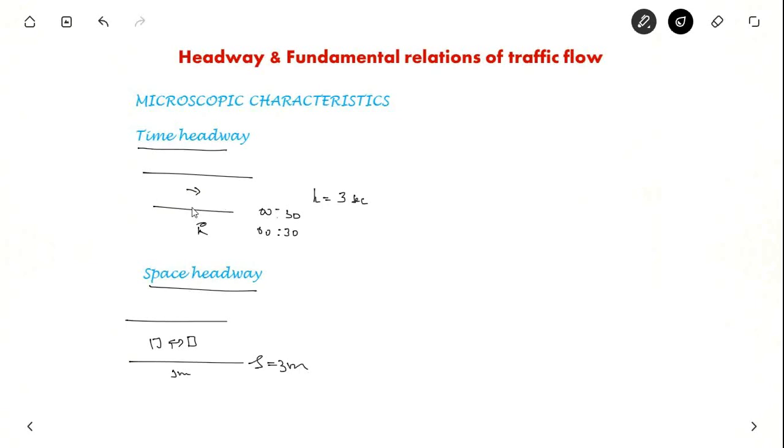Suppose there are n vehicles passing through this point. So the average headway will be total time taken for all the vehicles to pass, that is T divided by n. So from these two equations we know that flow is inverse of average headway. And here also if you solve we know that k is equal to Np by length L. So if you had observed for a length L, k will be 1 divided by average spacing.